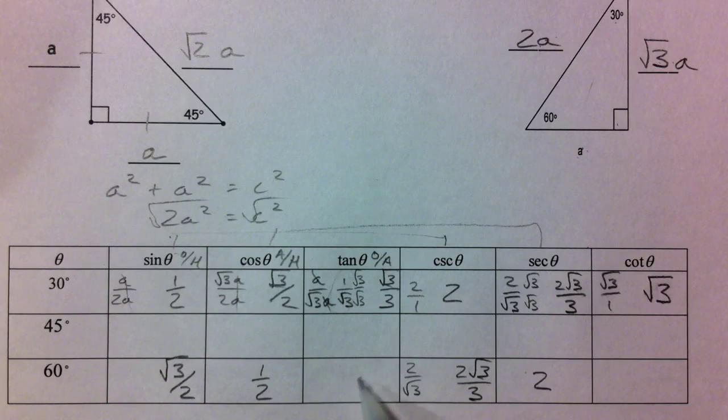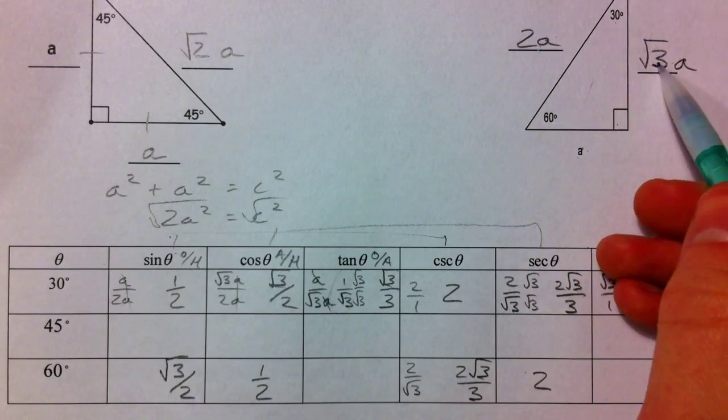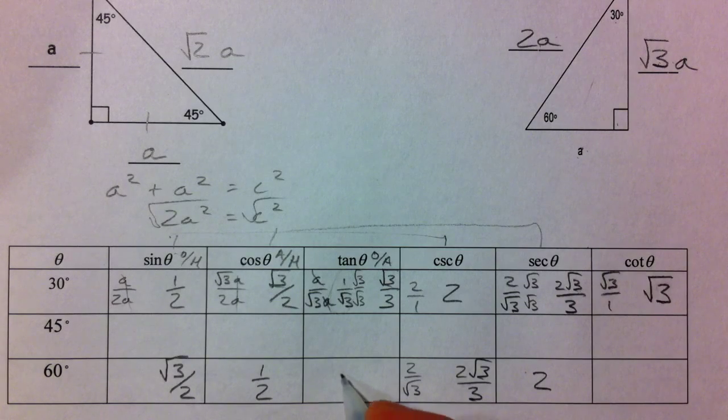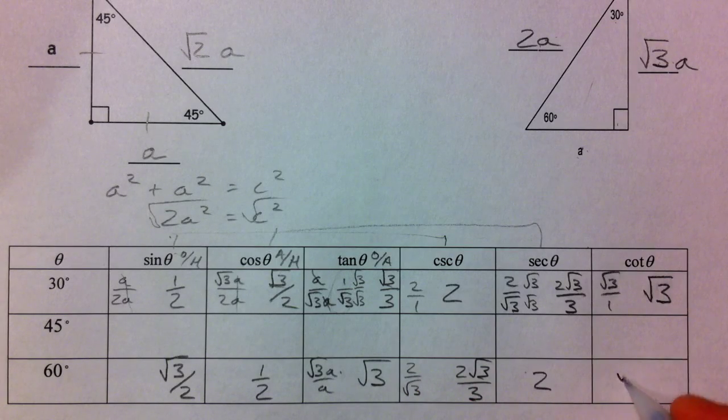Tangent. Tangent is now opposite over adjacent. So that's the root 3. A over A. So just root 3. And then root 3 over 3. It's reciprocal just like these were opposites.